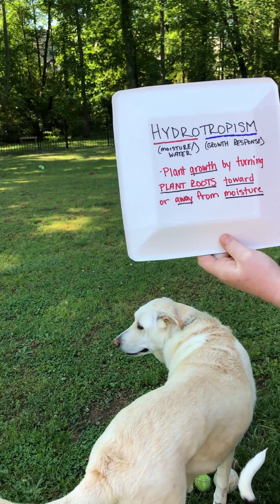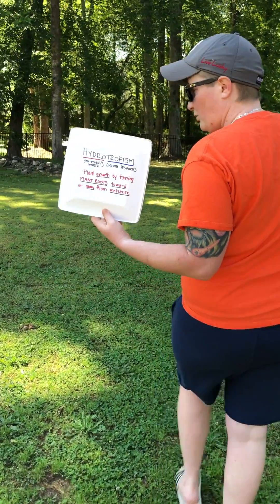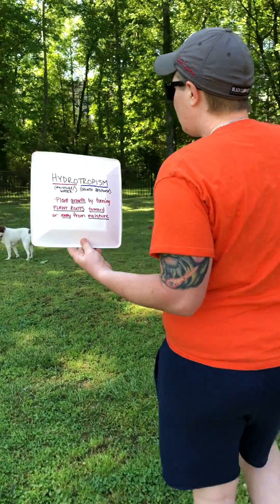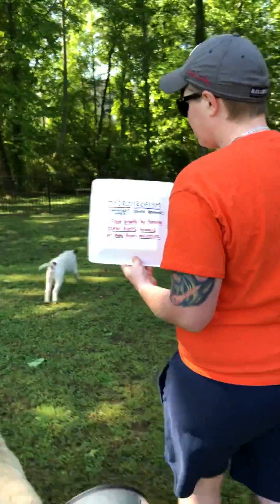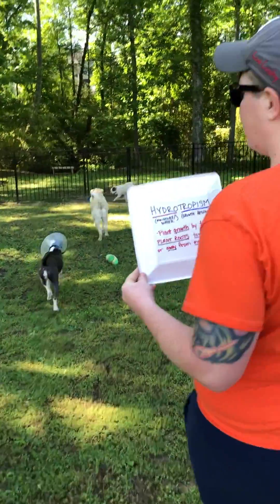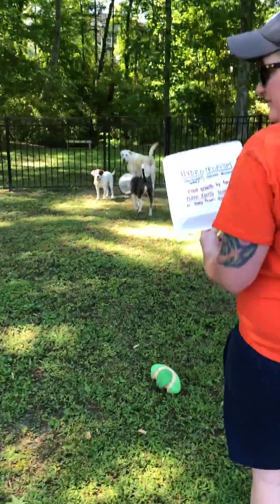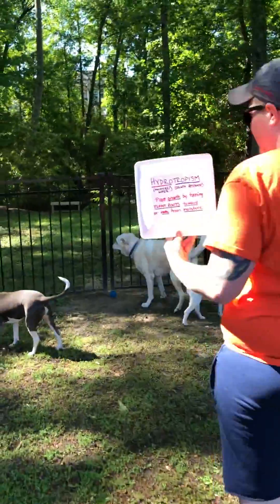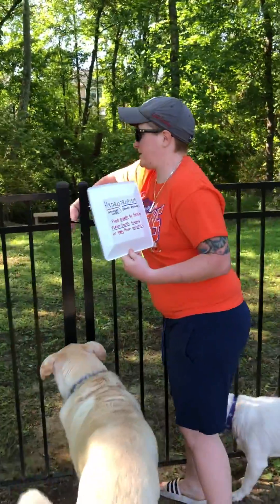Hydrotropism is when plant roots start reaching out and leaning towards where that water source may be. So if I come down here, I'm going into my backyard with puppies. You all want to go out there with me. If I come back here, we're going to start seeing a lot of roots.